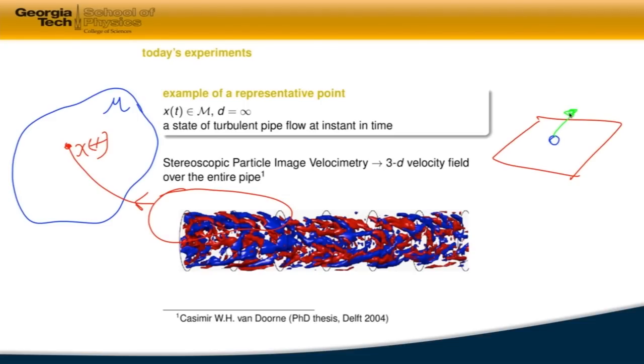So even for a billiard ball, you need four numbers to specify. In that case, we call it a phase space if it's Hamiltonian system, but it's not so important. But kind of dynamical systems we'll think about can be very, very complicated.